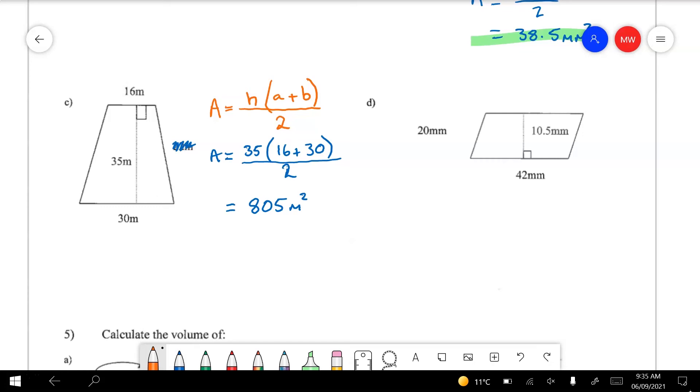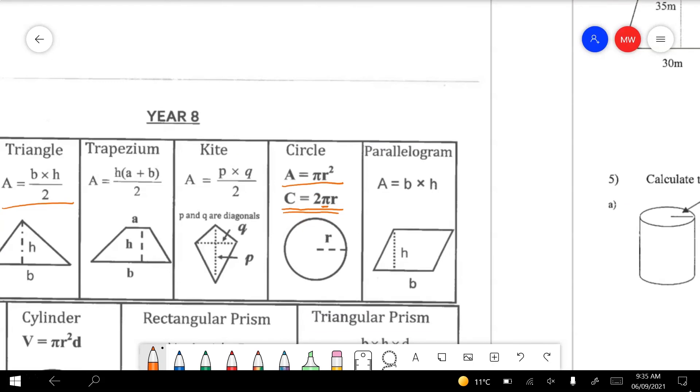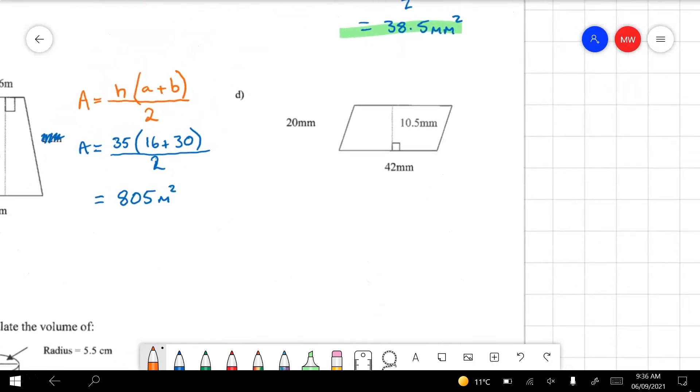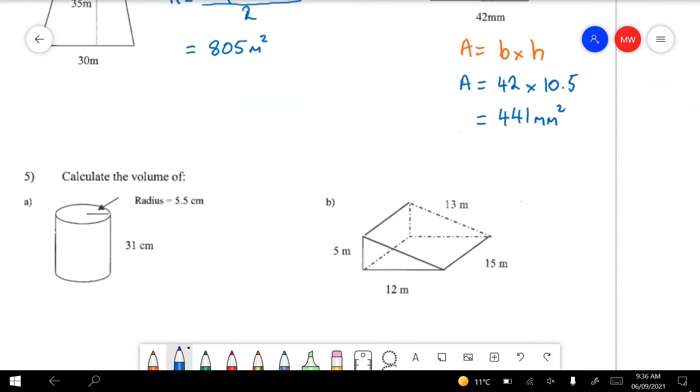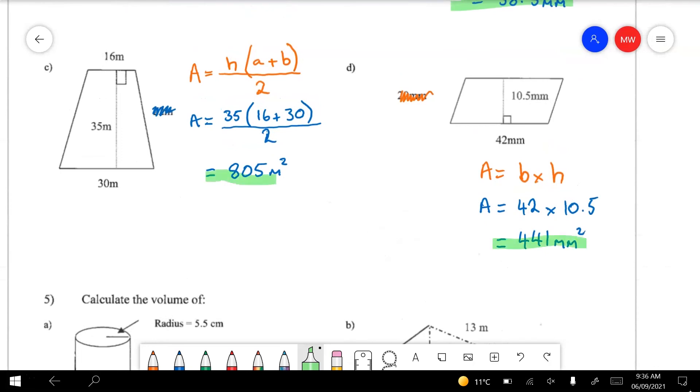All that stuff we were doing in the last unit in algebra with substitution is gearing you up for all of these real useful questions that you'll actually use. We're using a parallelogram this time. This one's nice and easy. Base times height. Back to your formula sheet. It's just like a rectangle. Area equals base times height. Again they're giving you disinformation to try and confuse you. This question really is as easy as base of 42 times the height of 10.5. Pop it into your calculator and you'll get 441 square millimeters.